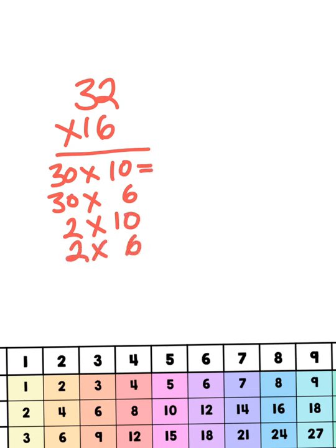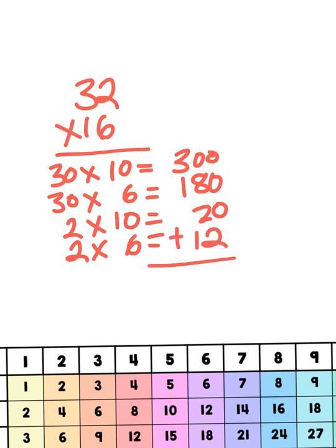Then I just need to find my partial products. 30 times 10 is going to give me 300. 30 times 6 is going to give me 180. 2 times 10 is 20. And 2 times 6, of course, is 12. So then when I add all these together, I get a complete product of 512. My partial products added together give me my final product.